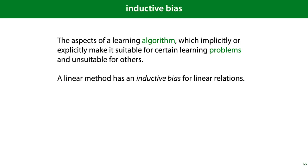An increasingly important phrase in machine learning is inductive bias. Inductive bias refers to those aspects of a learning algorithm which implicitly or explicitly make it suitable for certain learning problems and unsuitable for others. For instance, a linear method has an inductive bias for linear relations, making it unsuitable for datasets with non-linear relations, in which case the model underfits and doesn't perform well. The business of the data scientist is to figure out what the properties of the data are, and then to find a model with the correct inductive bias for those properties.